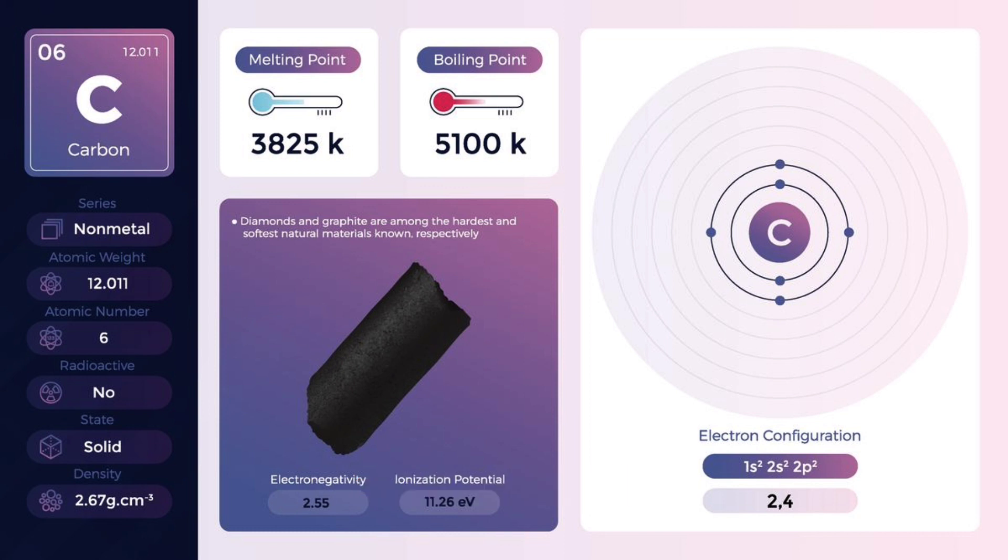3. Carbon. Carbon has six electrons. Its electronic configuration is 1s² 2s² 2p². Two electrons are in the first energy level, n equals 1, in the s orbital, and the remaining four are in the second energy level, n equals 2: 2 in the s orbital and 2 in the p orbitals.